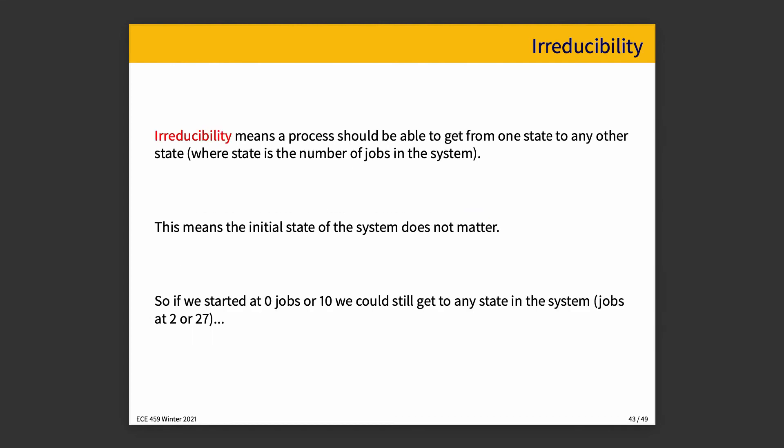I'm going to talk about irreducibility first. Irreducibility means a process should be able to get from one state to any other. In our case, state is the number of jobs in the system. So whether we start off with zero jobs, 10 jobs, or 100 jobs, we could always get to a state of three jobs in the queue, or zero, or two, or 27, or anything like that. That makes the system irreducible because we have the ability for it to be in any state.